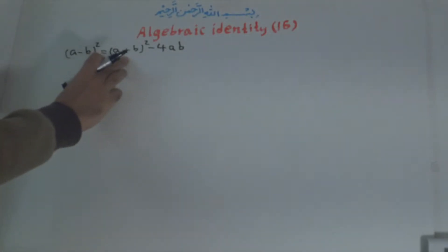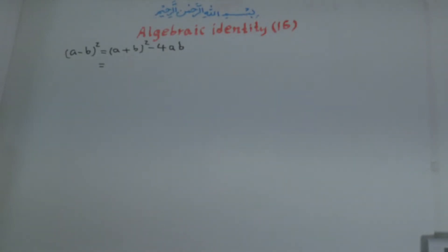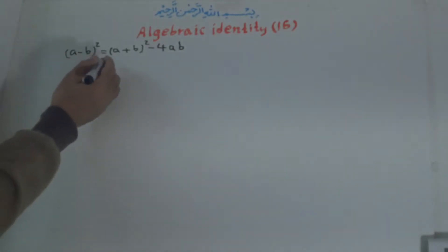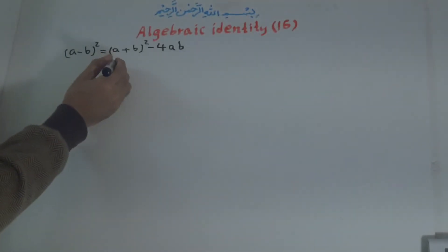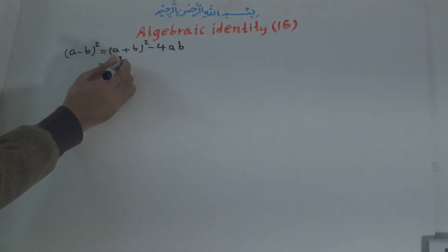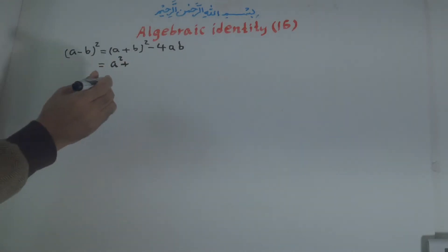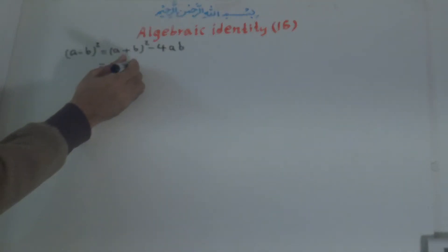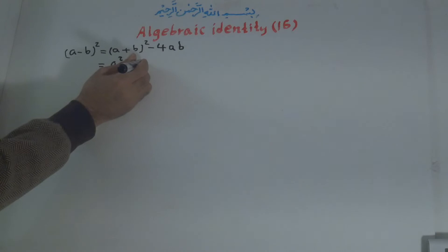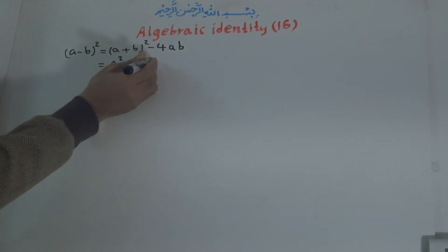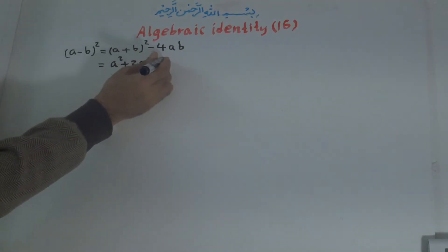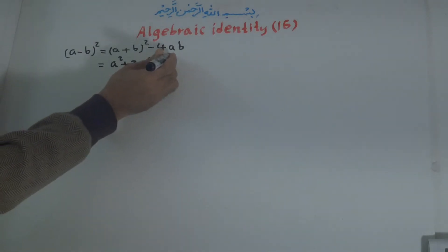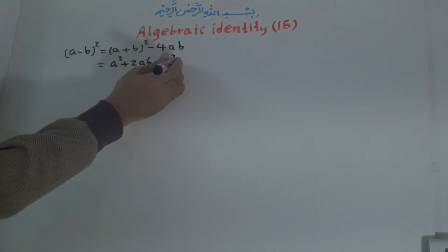So (a + b)², according to Identity number 1 from previous lessons, is equal to a² + 2ab + b². And to this we add minus 4ab.